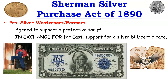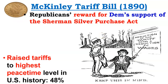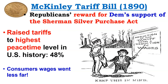Farmers and Westerners agreed to support a protective tariff in exchange for Eastern support of the Sherman Silver Purchase Act. In return, the Republicans' reward for Democratic support was a higher tariff — the highest in peacetime history at 48% on goods coming into the country — which was not so great for consumers.